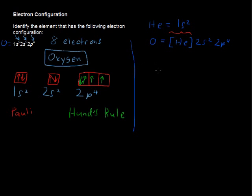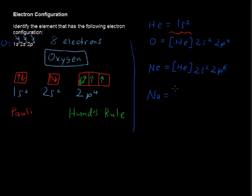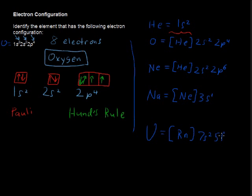If we move on down that row in the periodic table and get to neon, neon would equal the helium core plus whatever is added: 2s2 and 2p6. Then going to the next row, sodium is going to use the neon core — everything that neon has plus an electron in the 3s subshell. You can even get to uranium: uranium is the radon core plus 7s2, 5f3, 6d1. Radon has 86 electrons.